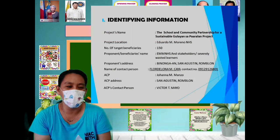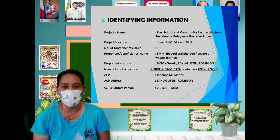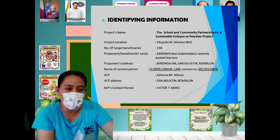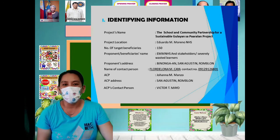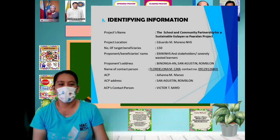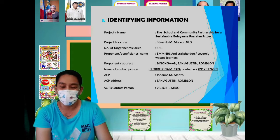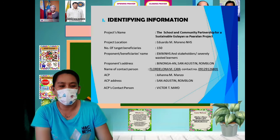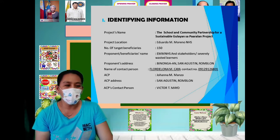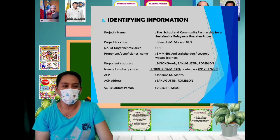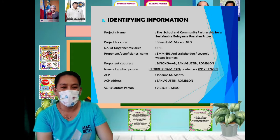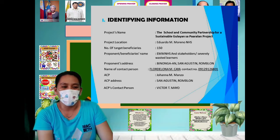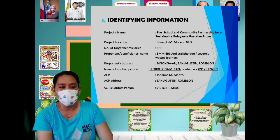So we will discuss first its identifying information. The project name is the School and Community Partnership for a Sustainable Gulayan sa Paaralan Project. It is located at Eduardo M. Moreno National High School vicinity — the project will be implemented inside the school. The number of targeted beneficiaries is 150. The proponent is the school, Eduardo M. Moreno National High School, and its stakeholders, including the support of the community. The beneficiaries will be the severely wasted learners. The address is Binungan, San Agustino, Romblon.